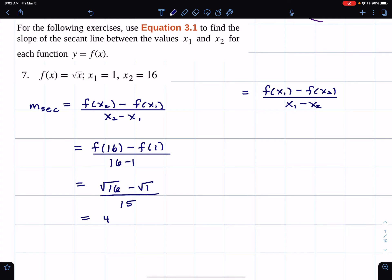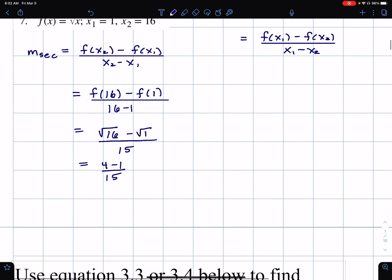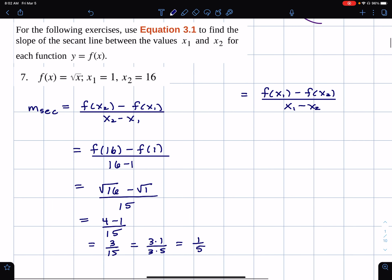but there's always room for improvement. So, let's see, that looks like it's 3 over 15, which is 3 times 1 over 3 times 5, so that makes 1 fifth. And that's the secant line.